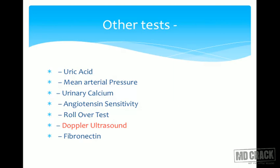Please remember: serum uric acid, mean arterial pressure, urinary calcium, angiotensin sensitivity, rollover test, Doppler ultrasound, and fibronectin are the screening/prediction tests for PIH. MCQs are asked many times on these topics.